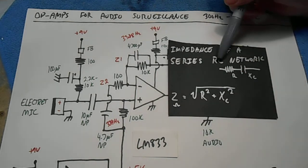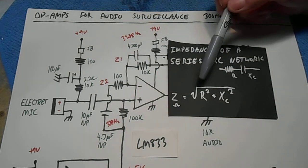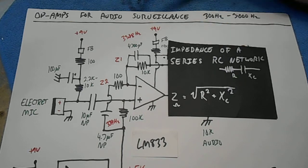For a series RC network, the equation is the square root of R squared plus X sub C squared. And also gives you in ohms.